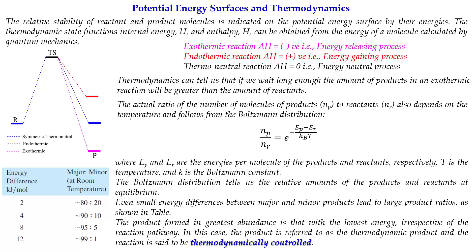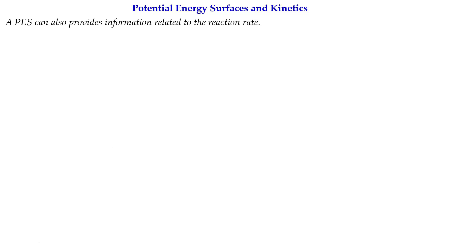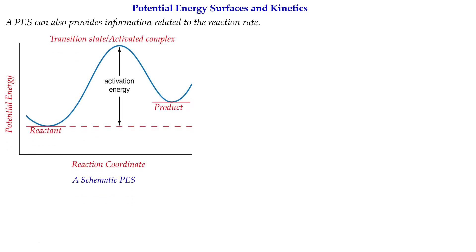Now, how can we get the idea of kinetics from the potential energy surface? The potential energy surface can give you the reaction rate. On a simplified potential surface showing reactant, product, and transition state — like the HCN to HNC transformation — we know the energies of the reactant, transition state, and product, so we can get the difference between the transition state and the reactant, which is the activation energy.